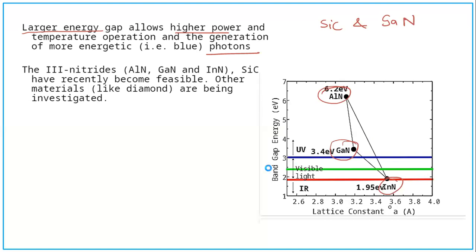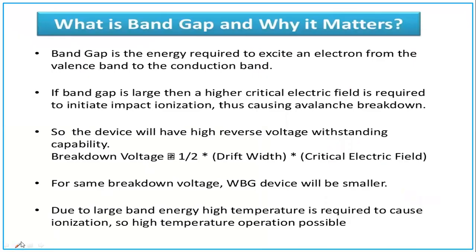Why band gap matters: the energy required to excite electrons from the valence band to the conduction band is the band gap. If the band gap is large, a higher critical electric field is required to initiate impact ionization, thus causing avalanche breakdown. So larger band gap means we need more electric field, and the device will have high reverse voltage withstanding capability. This can be calculated as: breakdown voltage equals one-half times drift region width times critical electric field.